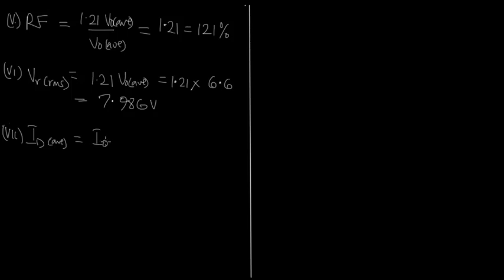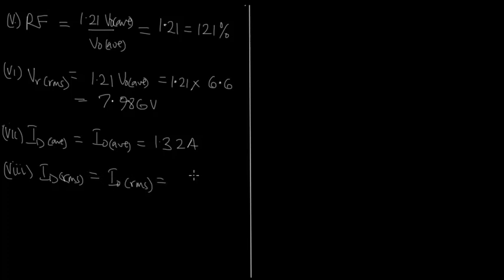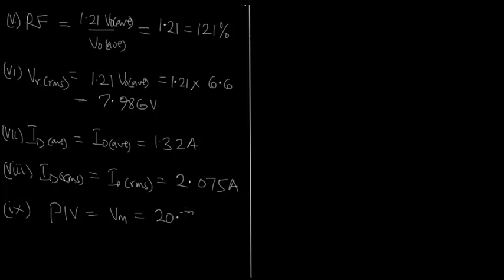The average diode current ID average is the same as I_out average, which is 1.32 amperes — it is the same as the load current. The RMS diode current ID RMS is the same as I_out RMS, which is 2.075 amperes. The peak inverse voltage PIV equals the peak voltage VM, which is 20.75 volts.